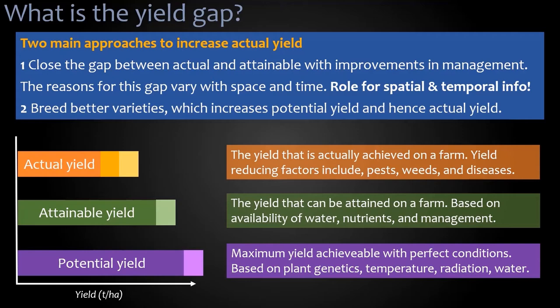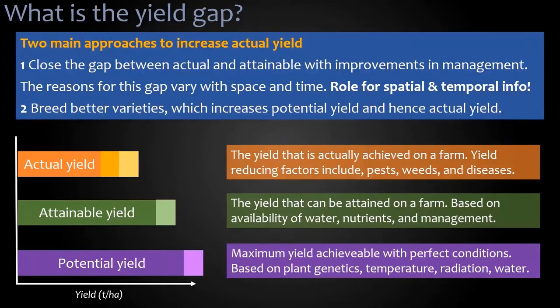Another way to increase yield is to increase the potential yield by breeding better varieties with more genetic potential to produce more. If we increase potential yield, we increase attainable yield, and actual yield benefits as well.